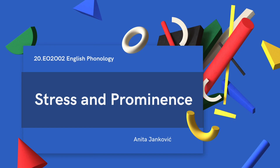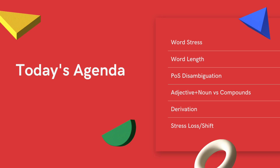Hello. The topic of this video lecture is stress and prominence in English language. I will first talk about the definition of word stress, what the elements of stress are, and what different types of stress there are. Secondly, we'll take a look at how word length influences stress placement. Finally, word stress may be used distinctively in English in three different ways: part of speech disambiguation, adjective plus noun versus compounds, and in derivation. I will also briefly talk about stress loss or shift, giving a definition and some examples.